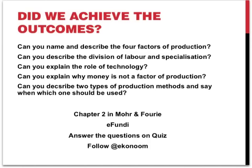So, did we achieve the outcomes of this section? Can you name and describe the four factors of production? Can you describe the division of labor and specialization? Can you explain the role of technology in the production process? Why isn't money a factor of production? And finally, can you describe the two types of production methods and say which one should be used under which circumstances — more labor-intensive or more capital-intensive production? You can also have a look at chapter 2 in Moerenfuri. There are more resources available on your Fundi and you can answer the questions on the quiz.